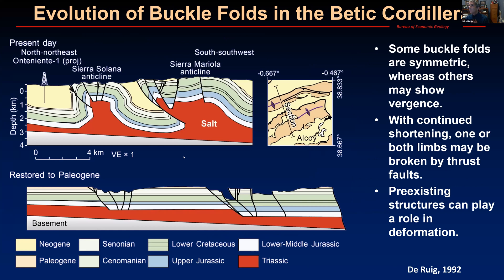Here's another example from the Betic Cordillera in Spain. Again, the lower units are all constant thickness with no thinning across the anticlines — they are pre-kinematic. The later units show all the exciting isopac variations. This shows a couple of examples: a fairly upright box fold, and cases where significant shortening has produced a thrust fault that has offset one or both limbs of the anticline. So this structure started as an anticline and is now developing a thrust fault.